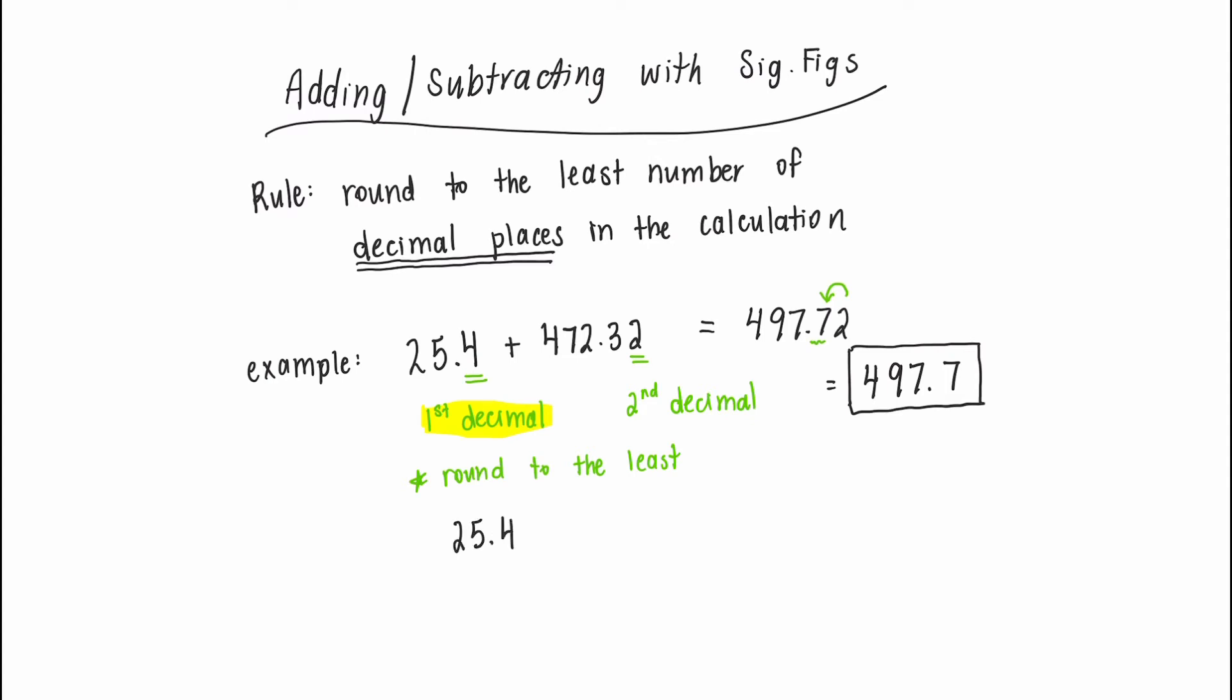Sometimes it helps to visualize these numbers stacked on top of each other, so we can see how the decimal points line up. You might notice that we don't actually know what's in the second decimal place of our first number, so when we write our answer, that second decimal place is actually unknown. So we're not going to include that decimal place in our final answer.